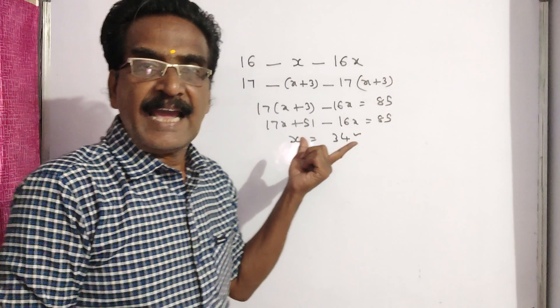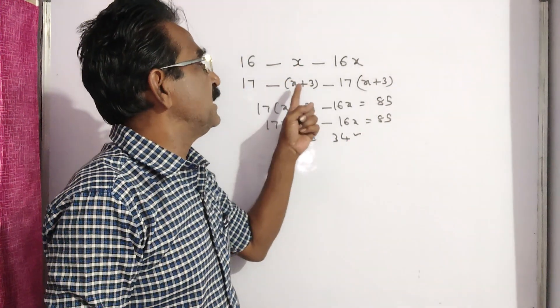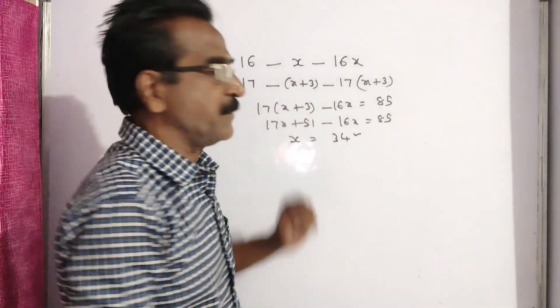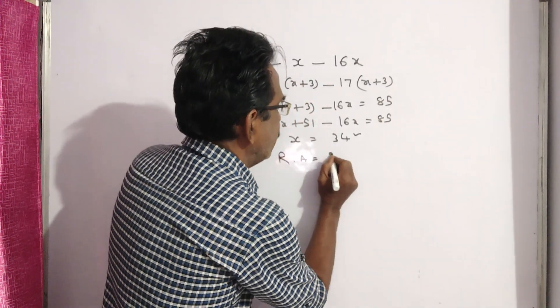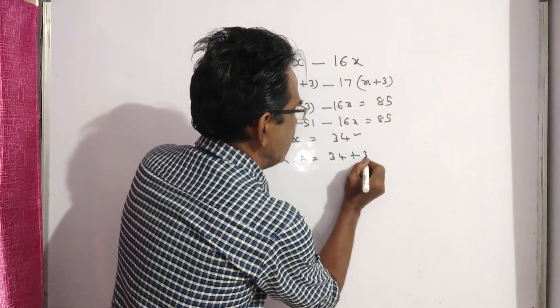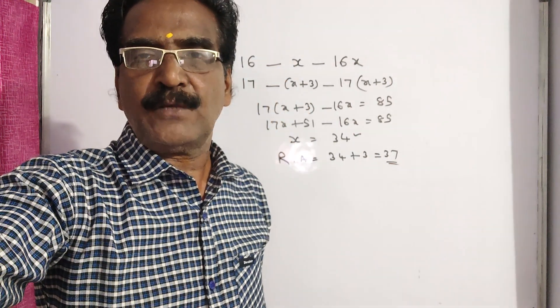This X is his average up to the 16th match. After the 17th match, his average is increased by 3. So the required answer is 34 plus 3, that equals 37. Okay friends, thank you, have a nice day.